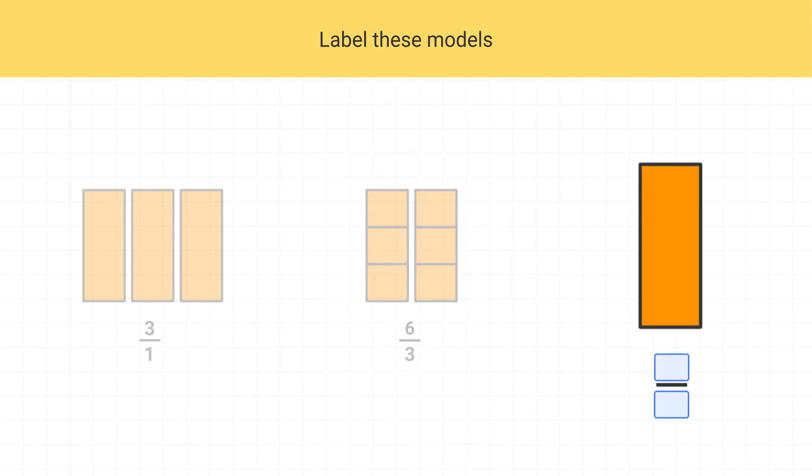Finally, let's look at this last model. How many shaded pieces are there? Well, all we have is this 1 shaded rectangle, or 1 shaded piece, so our numerator is a 1. And because it's a whole rectangle, our denominator is 1 as well. This is 1 over 1, or 1 whole.